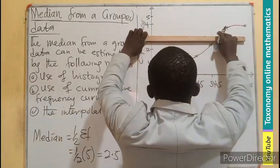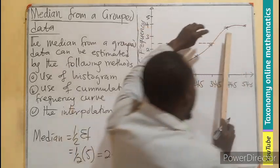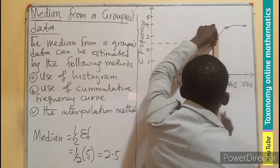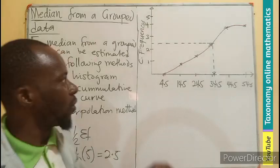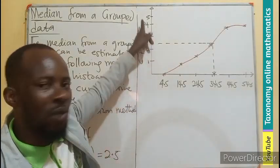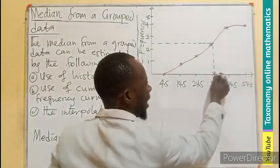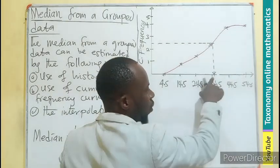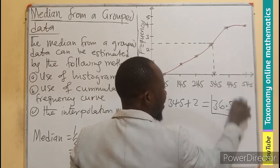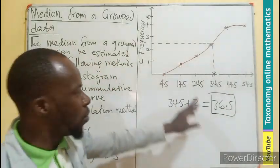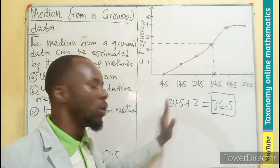So you draw a line to meet the curve. Then you bring it down. As you bring it down, the value you have here is on the cumulative frequency. So you are looking for the mark, whether it is a mark, ages, or height of people. So the number that you are seeing at this place, I can see, let's say, 2 added on to 34.5. So 34.5 plus 2 will give me 36.5 as the median of this data. No more a range of numbers, but just a value.